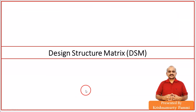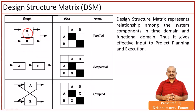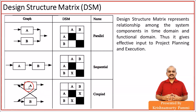The next technique: Design Structure Matrix. Tasks can be parallel — task A and task B are parallel. Or sequential — task A is a predecessor to task B, so if you see row B, task A is predecessor. Or coupled — for task B, task A is predecessor; and for task A, task B is also predecessor. In development projects with huge numbers of tasks, Design Structure Matrix represents relationships among system components in the time domain and functional domain, giving effective input to project planning and execution.